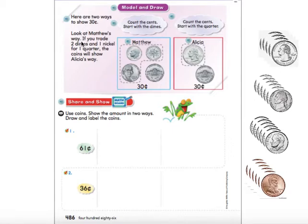Look at Matthew's way. If you trade two dimes and one nickel for a quarter, the coins will show Alicia's way. So here, this shows 30 cents: 10, 20, 25, 30. But I know a quarter is worth 25 cents, so I can just do 25 plus a nickel, which is 5, and that's 30 cents as well.